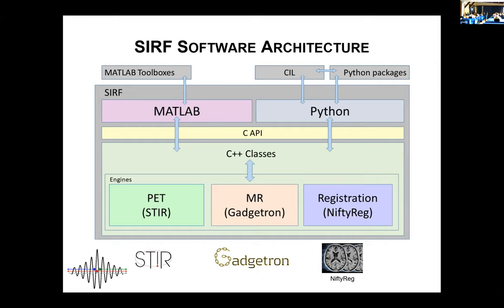What we have is a layer of C++ on top of those engines, and that C++ layer is interfaced via Python and MATLAB. We're only going to use the Python interface — unfortunately our MATLAB interface we don't maintain anymore from the next version onwards, because we just don't have the time and there is less and less interest in MATLAB in our community anyway. The Core Imaging Library is mostly Python-based and therefore interfaces via Python.